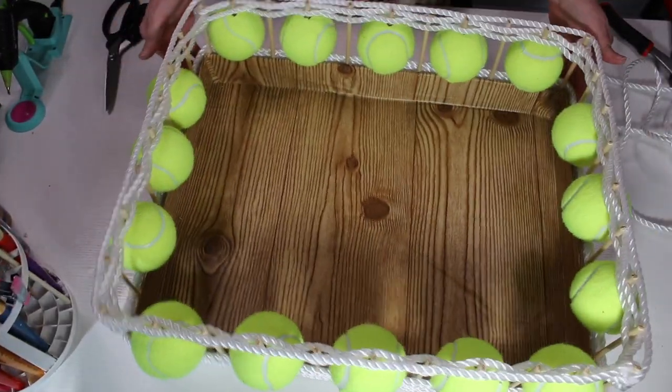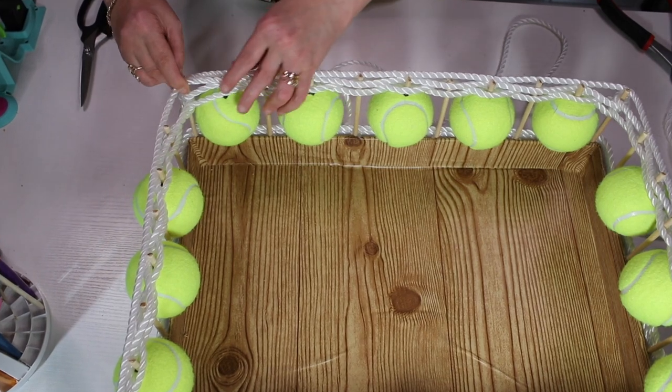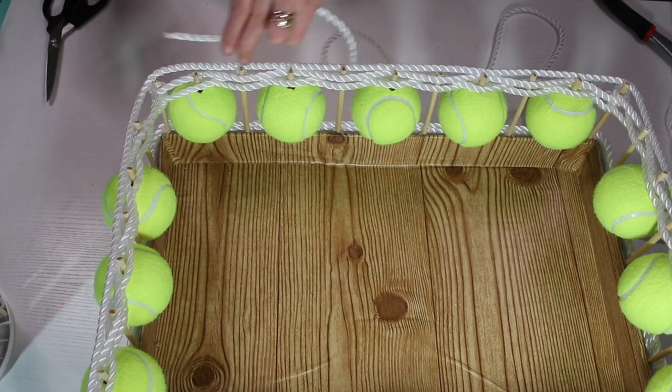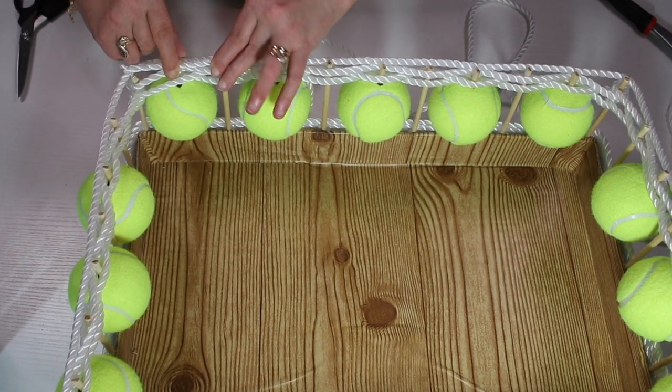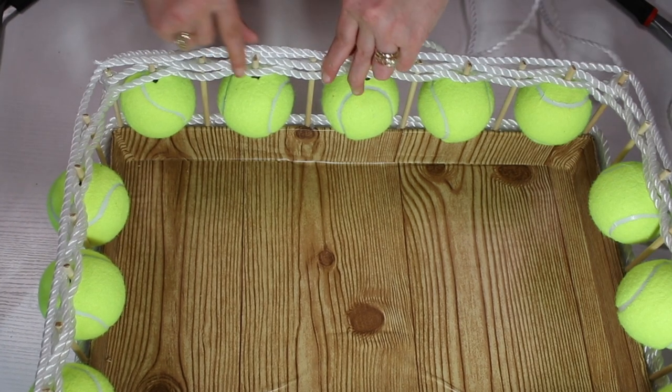And after that was done, I went back to my rope and covered all those wooden sticks that were kind of sticking out with the rope. So I did one row on top and one kind of inside, and that was pretty much it what I did to the box.